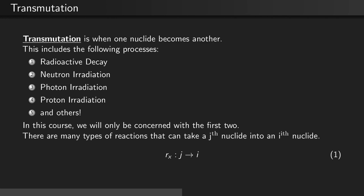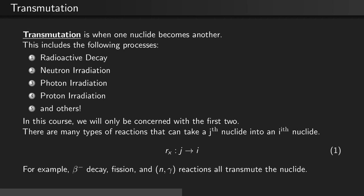There are many types of reactions that can take a j-th nuclide into an i-th nuclide. Denote this as the reaction J to I. For example, beta minus decay, fission, and gamma reactions are all processes which can transmute nuclides.